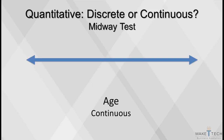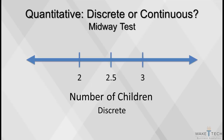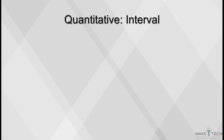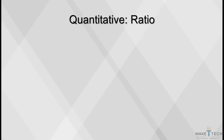An example of a discrete variable is the number of children in a family — 2.5 does not make sense. The interval level of measurement ranks data and can be either discrete or continuous. With interval variables, precise differences between units of measure exist, but there's no meaningful zero. For example, take IQ scores — it makes sense to talk about someone having an IQ 50 points higher than another person, but an IQ of zero has no meaning.